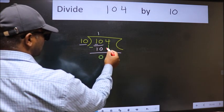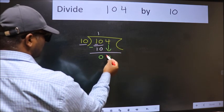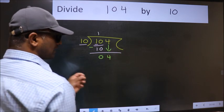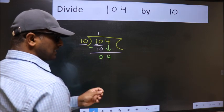After this, bring down the next number. So, 4 down. After this step, the mistake happens and the mistake is this. Here we have 4 and here 10. 4 is smaller than 10.